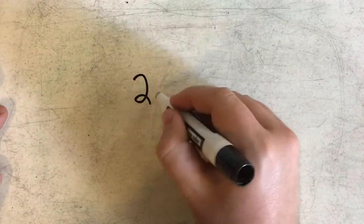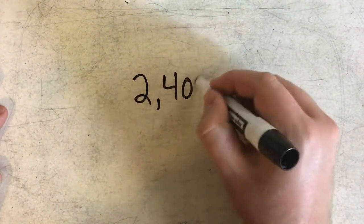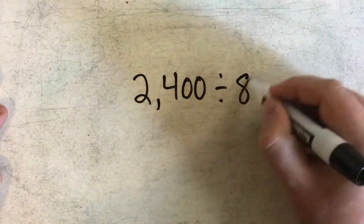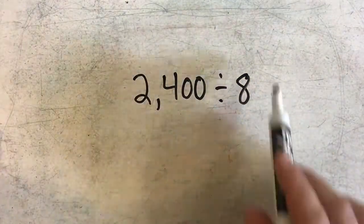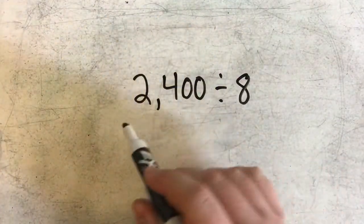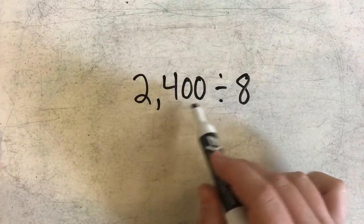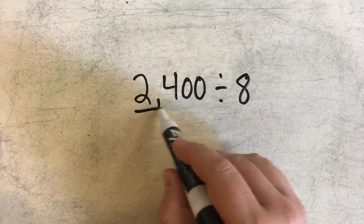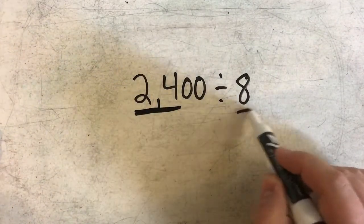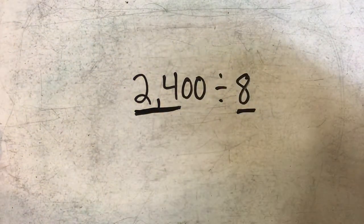I'll do one more example here. This time we'll do 2,400 divided by 8. Again, rather than working this all the way out, since it's a multiple of 1,000 and I see some zeros here, all I need to do is locate my basic fact, which is 24 divided by 8.